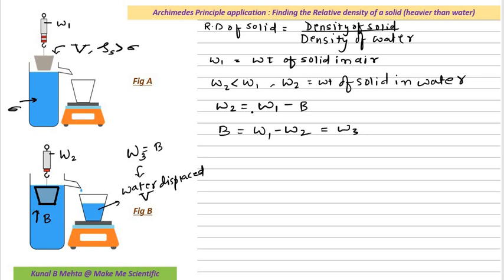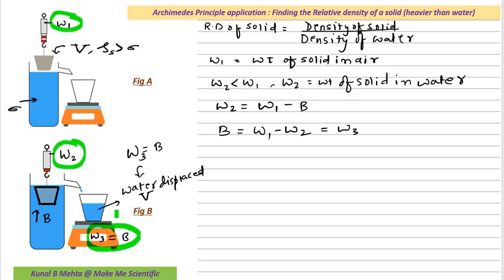Everything is discussed in Archimedes' principle. Now, we are doing an experiment, and in experiments we are supposed to plug in the values which we know. W3 will be displayed over here — the weight of the water displaced — and that itself is equal to the buoyant force. So what are the things that we know? I know W1, I can record it. I know W2, I can record it. I know W3, which is the buoyant force. On the basis of these three values, I am supposed to find out the relative density of the solid.